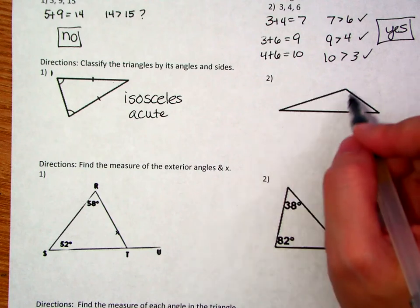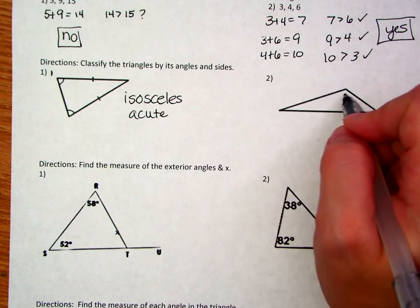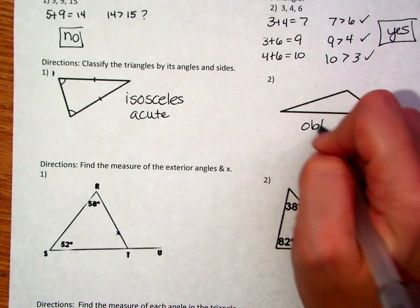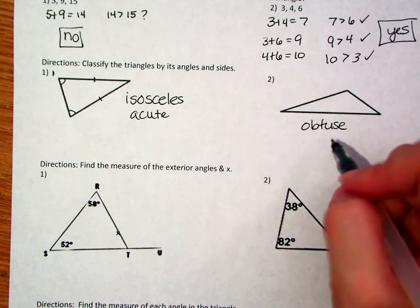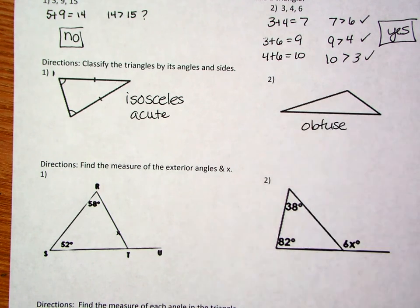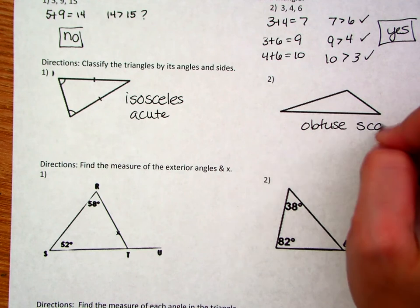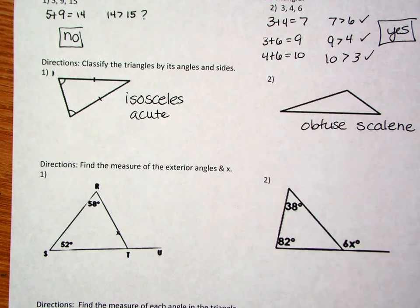Looking at this one here, if you notice, this would be like an obtuse angle. So we've got an obtuse angle. We could take a protractor to it and measure it. And then we also see that all three sides are different lengths. When they're different lengths, we would call that scalene. So this would be like an obtuse scalene triangle.